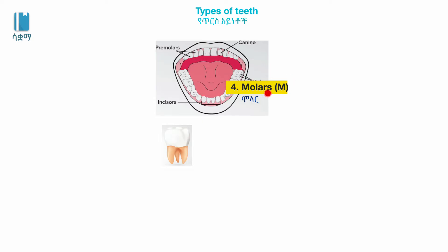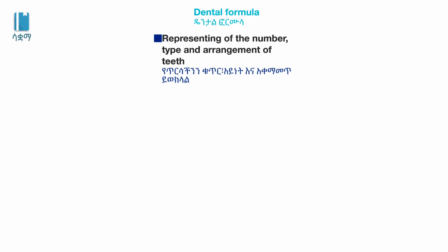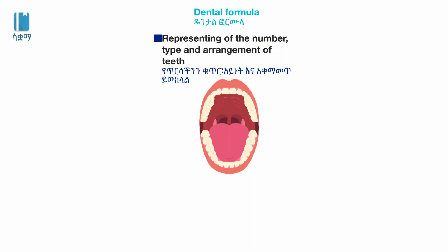This is the pre-molar formula, which is the same as the dental formula. The dental formula is representing the number, type, and arrangement of teeth in the upper and lower jaws.